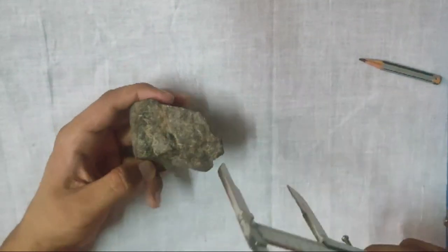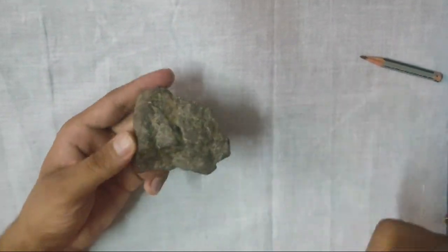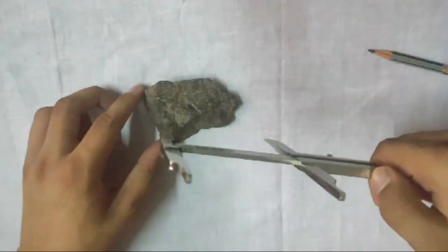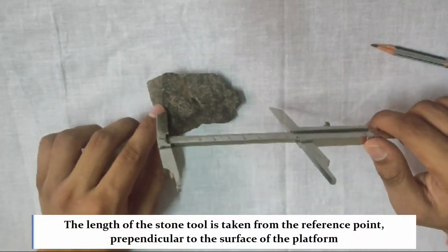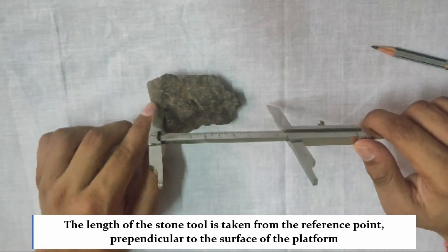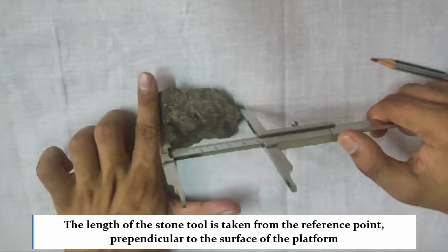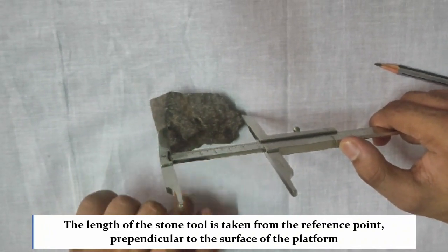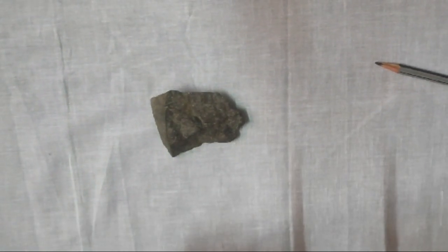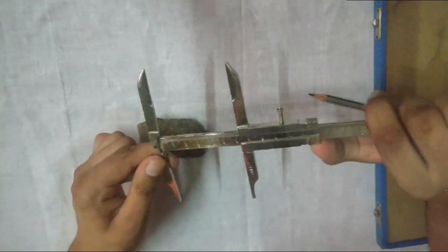Now that we have our reference point, we will measure our length. Our length will be taken as a line perpendicular to the surface of the platform from the midpoint. This comes out to be 6.3cm.